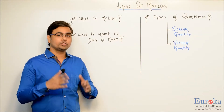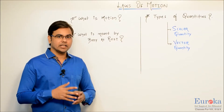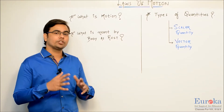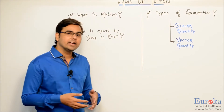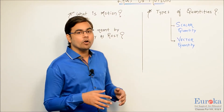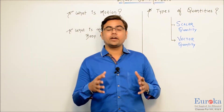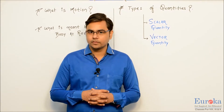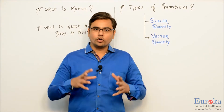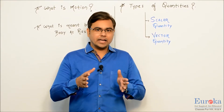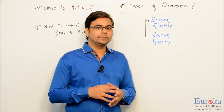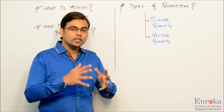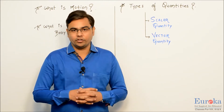Now that we have answered the two most basic questions — what is motion and what is a body at rest — let us move ahead and understand the different types of quantities we are going to study in this chapter. All the quantities we study will be classified into two types: either scalar quantity or vector quantity.